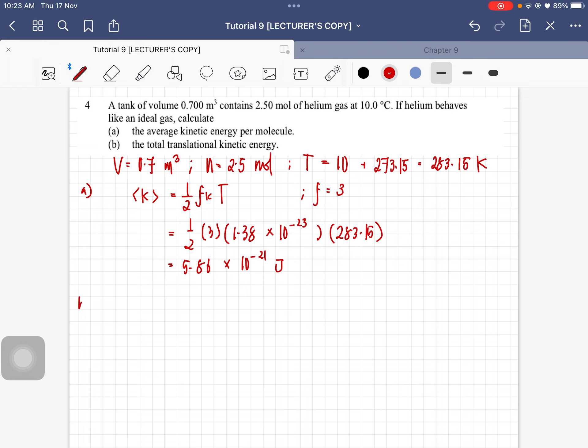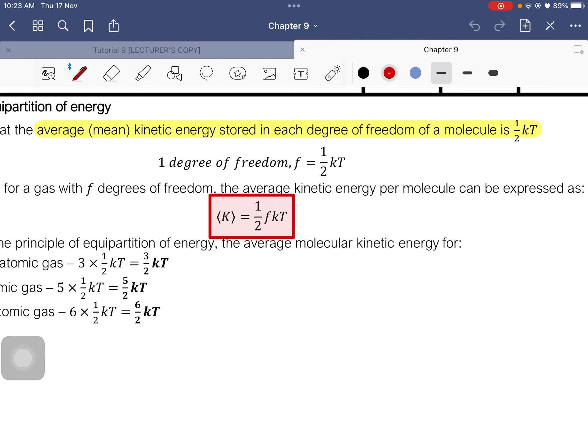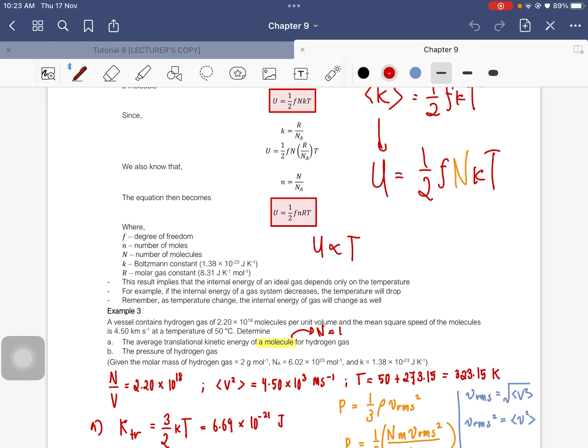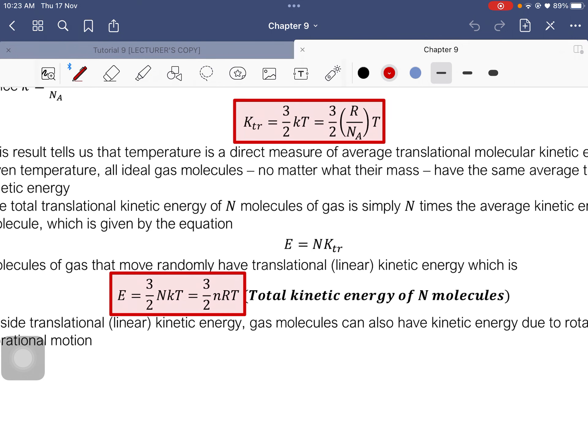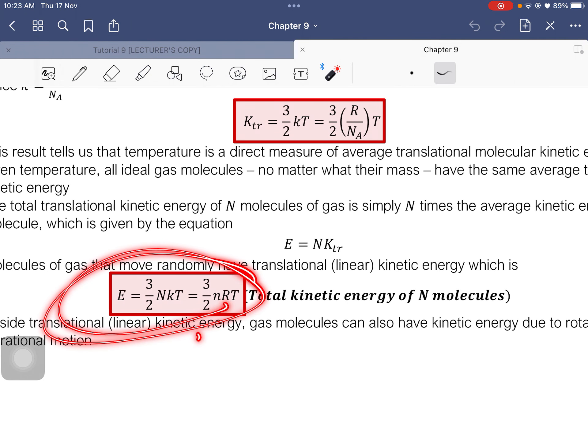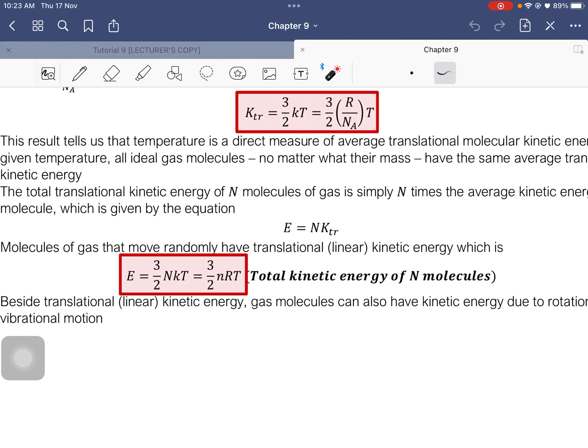Next, we have to determine the total translational kinetic energy. So I would use E because based on our reference book, it should be E lah. E is telling us that it is the total translational kinetic energy which is why I use E here. Di sini. So this is the formula for total kinetic energy of N molecule.